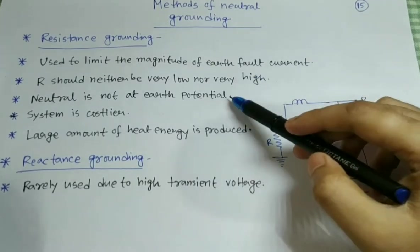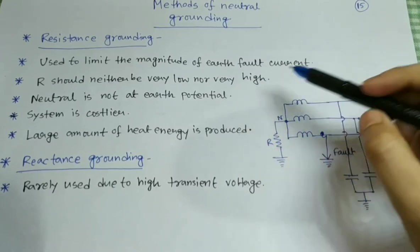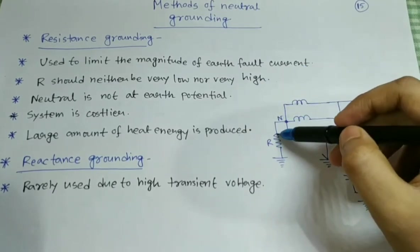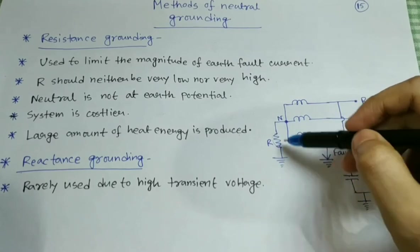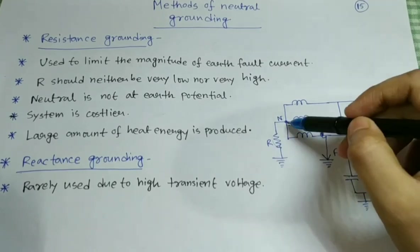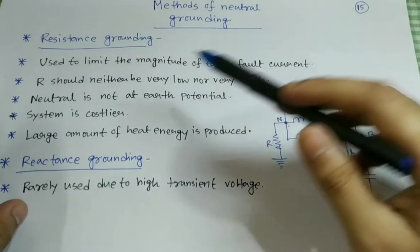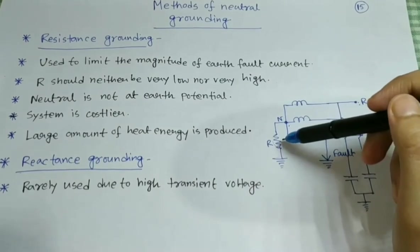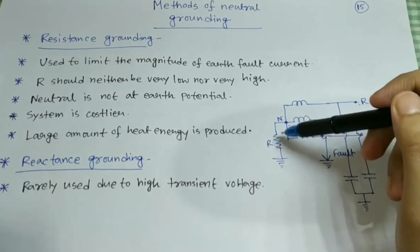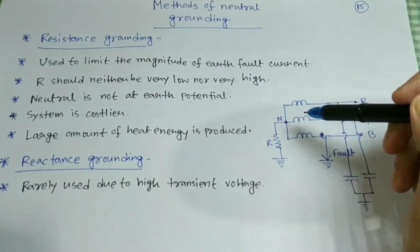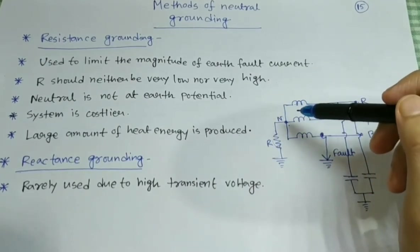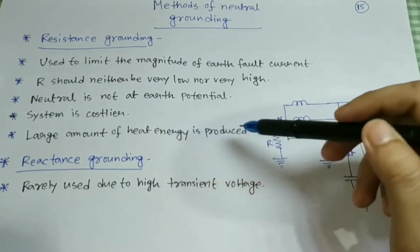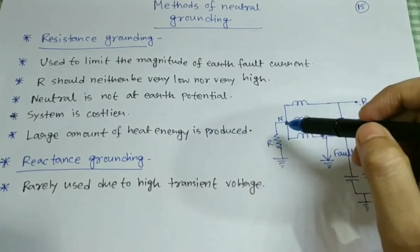A third point is that the neutral is not at earth potential. Unlike solid grounding, here due to this resistor, the ground and neutral are not at the same potential. The system is costlier because you are using a resistor, so definitely the system will be costly and maintenance is required. Also, a large amount of heat energy is going to be produced.